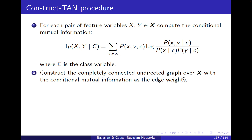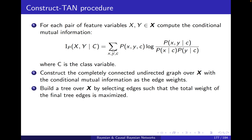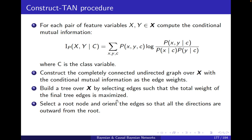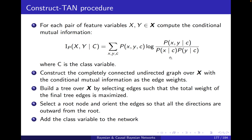We construct a completely connected undirected graph over X with the conditional mutual information as edge weights. The reason we condition on c is because of the special property that the class variable is on top and all other variables are at the bottom. Then, just as we did for tree structures, we build a tree over X by selecting edges such that the total weight of the final tree edges is maximized. Once we have the skeleton, we select a root node and orient the edges so that all directions are outward from the root. The only perhaps new thing in TAN is how we calculate the weights — conditional mutual information.